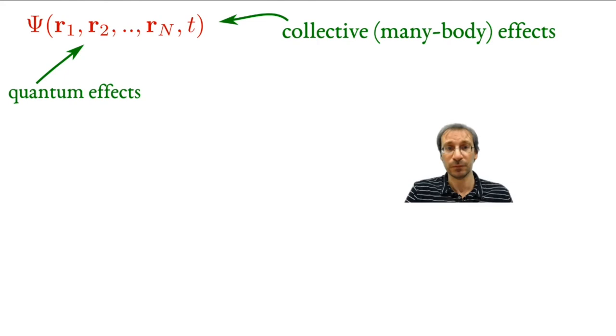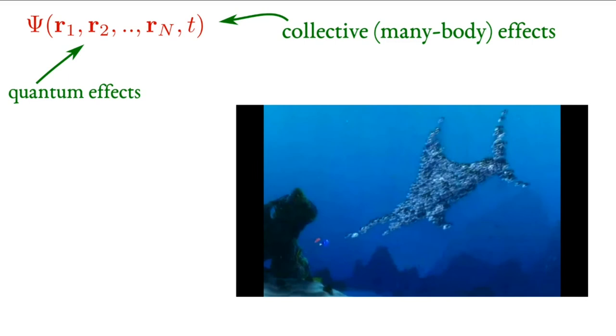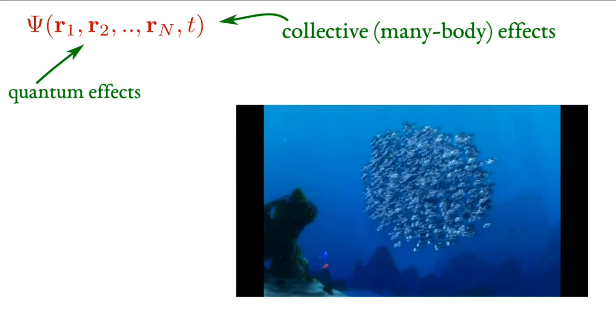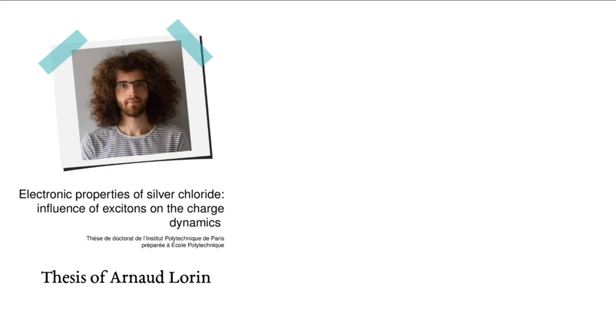These collective or many-body effects are found also outside quantum physics. Even in the cinema, in the movie Nemo, lots of little fish can act together to create big shapes to scare bigger enemies. Exactly like the little fish, the electrons do interact and show collective effects that can completely change the movie. We don't look at fish, of course.